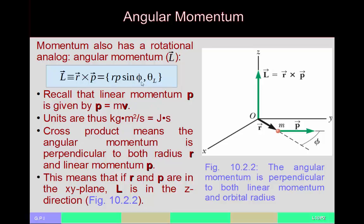Many sources use theta for the angle between R and P, but I use phi to distinguish from theta_L. This angle theta might actually represent two different angles — one within the XY plane and one with respect to the XY plane. If R and P are both entirely in the XY plane, then the angular momentum will have a 90-degree angle with respect to the XY plane for one of its components.